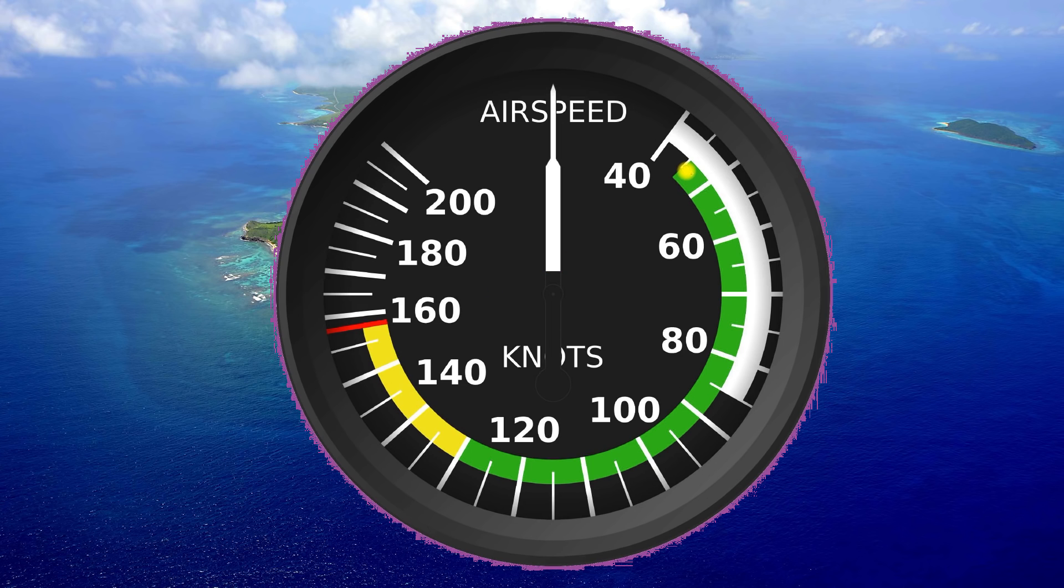So bottom of the green arc, obviously that's our 1G stall speed. So it's a power off, flaps up, 1G stall speed. If the aircraft is supporting 1G force, or it's certified for 2,000 pounds gross weight, and it's at 2,000 pounds, that's the speed it's going to stall at.